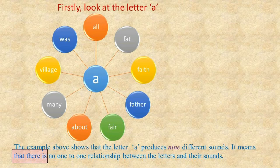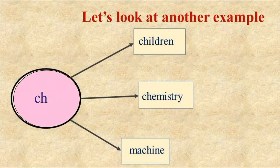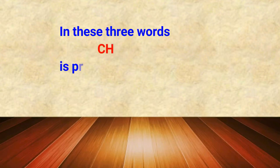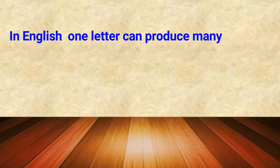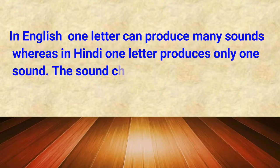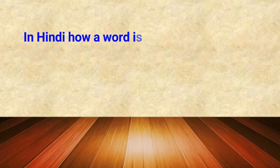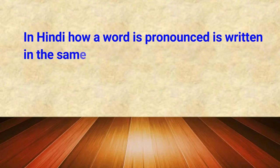It means there is no one-to-one relationship between the letters and their sounds. Let's look at another example: CH. In the words children, chemistry, and machine, CH is producing three different sounds. In English, one letter can produce many sounds, whereas in Hindi, one letter produces only one sound. The sound changes only when a matra is added to it. In Hindi, how a word is pronounced is written in the same manner — this is known as Ninad Anugamani.